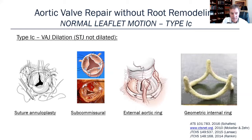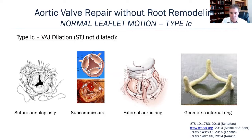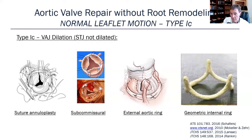Type 1C is dilatation of the aortic annulus. There have been various techniques to address this, some more successful than others. Suture annuloplasty has been attempted to pull the annulus together, but doesn't usually have great long-term results. An external aortic ring can be combined with a valve-sparing procedure to bring the annulus back to a normal diameter. Subcommissuroplasty is an older technique with some benefit, but not overwhelming if there is truly dilatation of the annulus. The new geometric internal ring — I'm going to show a video of how that's implanted in a minute.